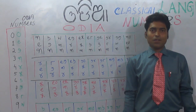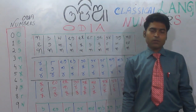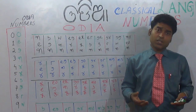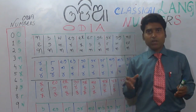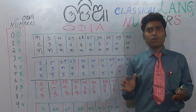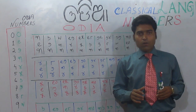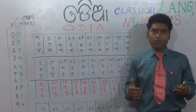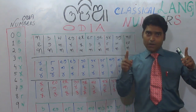Hi friends, today we'll discuss about the Odia language multiplication table. We have the three multiplication table, four multiplication table, five multiplication table, and more. We have already discussed about the numbers.